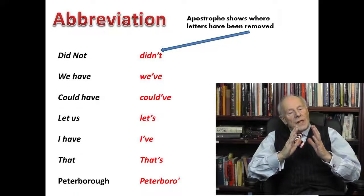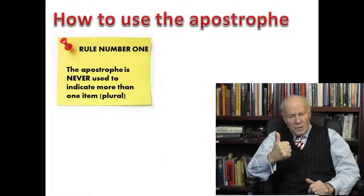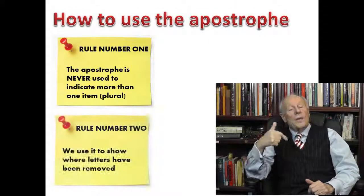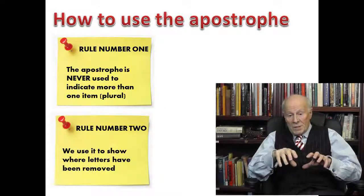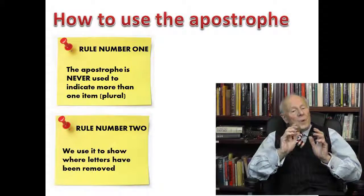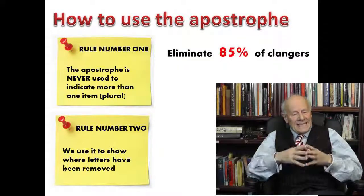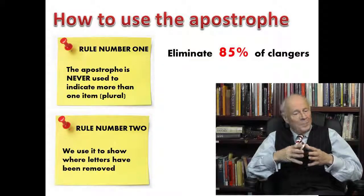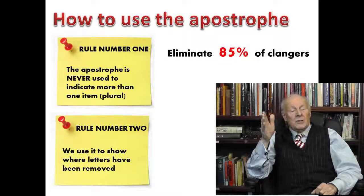Those are the first two rules: one, never use an apostrophe to make something plural; two, whenever you drop letters to make an abbreviation, you do use an apostrophe to show what you have done. If you always apply both rules, you will eliminate eighty-five percent of apostrophe blunders. In our next session, we're going to look at the third rule: ownership.